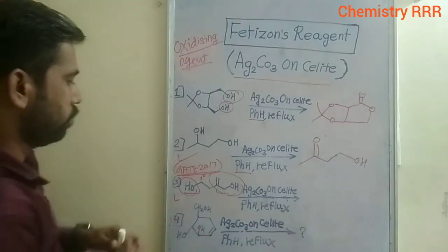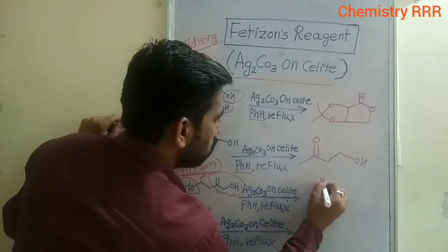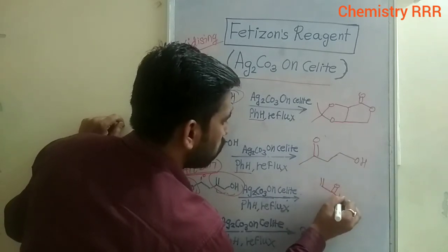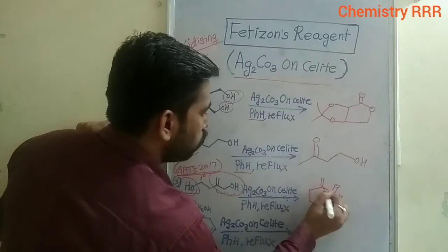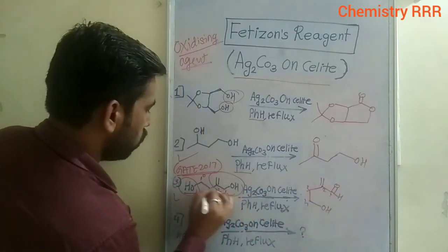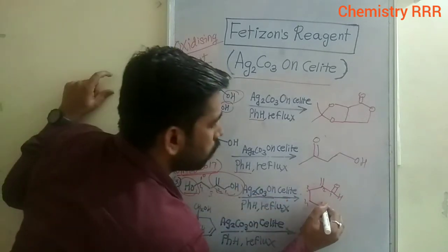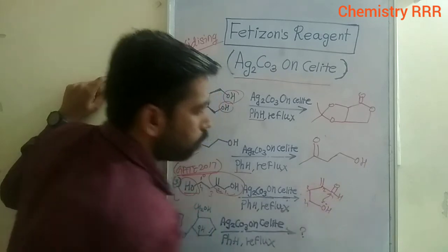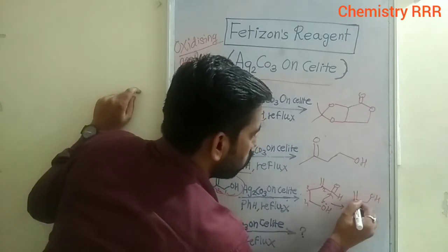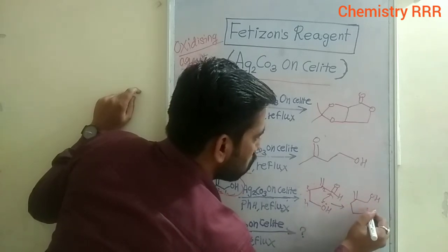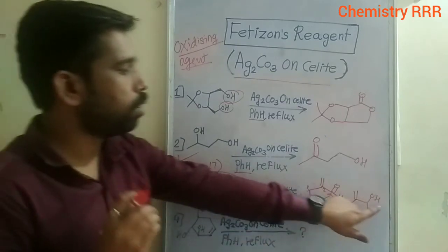We get the oxidation of the allylic alcohol to the corresponding aldehyde. The remaining carbons are numbered 1, 2, 3, and 4. After that, the primary alcohol attacks the electron-deficient carbonate center and we get the corresponding lactone. You know that Fétizon's reagent converts a diol to the corresponding lactone.